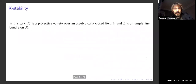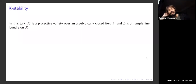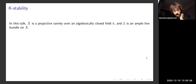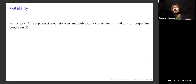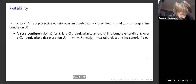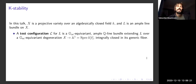Let me start with the setup. We are working over an algebraically closed field K that doesn't need to be characteristic zero most of the time. X is a projective variety which doesn't need to be smooth or even normal for the moment, and L is a fixed ample line bundle in the whole talk. Let me briefly recall stuff that probably everybody knows, just to set up some notations.